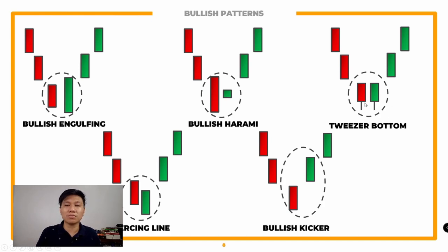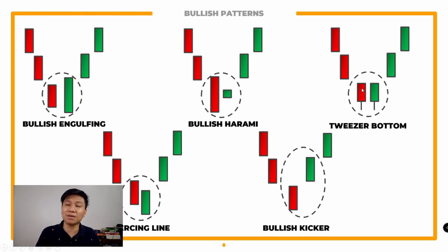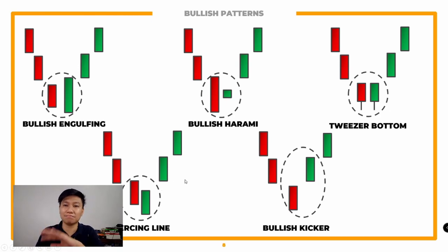Yung tweezer bottom — madalas mo rin ito makikita. Hindi necessarily dapat pantay yung body ng candle. Ang pinaka-rule lang dito: dapat pantay yung pinaka-lowest point niya — dapat may wick yan, at pantay yung lowest price point niya for both candlesticks. Then it should push the price up doon sa highest point ng previous day. As long as naabot ang rule na magpantay siya sa lowest point, that should confirm some reversal. You still need to wait the following day — trade a bit above and identify mo rin yung cut loss mo.